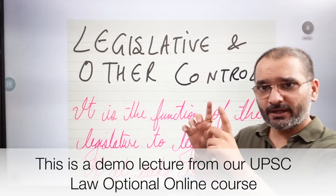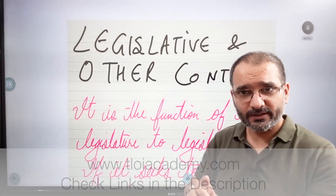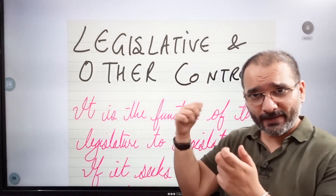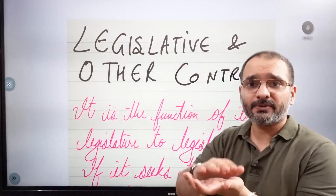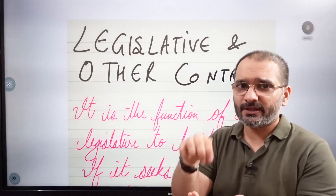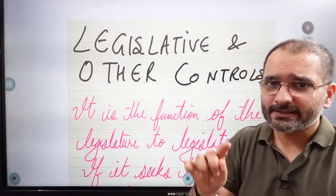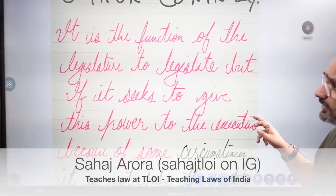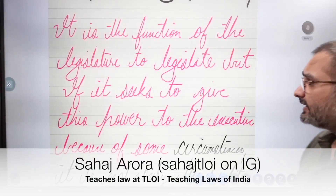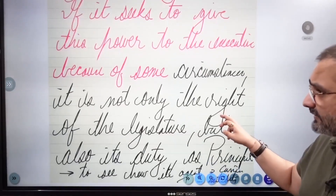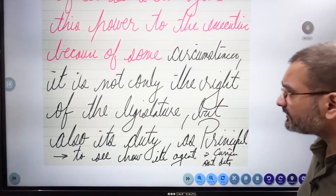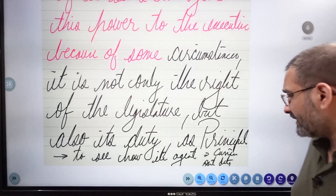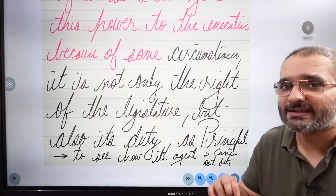Namaste. We have taken a look at judicial review over delegated legislation. Now we'll look at legislative and other controls. When we combine this lecture with the previous one it'll become a very solid answer, and the icing on the cake we will add with the next lecture. It is the function of the legislature to legislate, but if it seeks to give this power to the executive because of some circumstances, it is not only the right of the legislature but also its duty as principal to see how its agent carries out the duty.